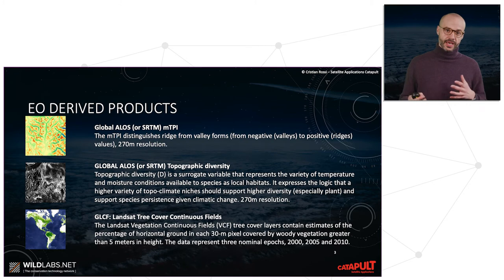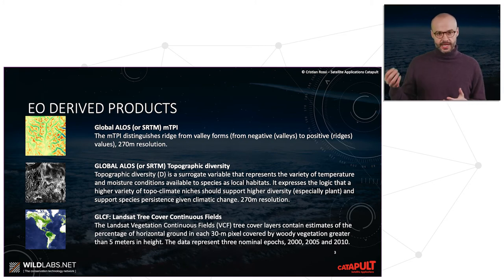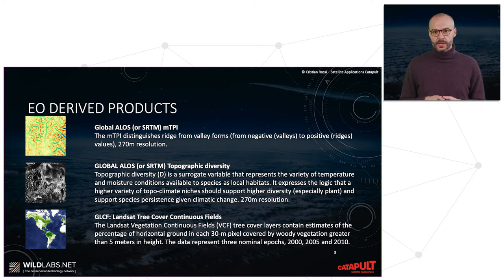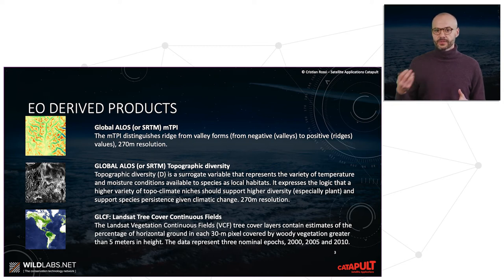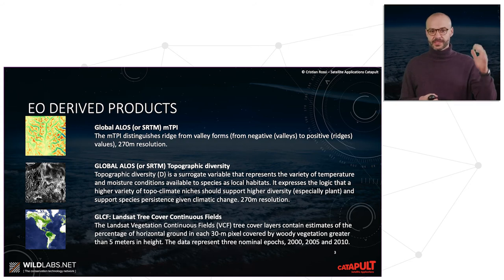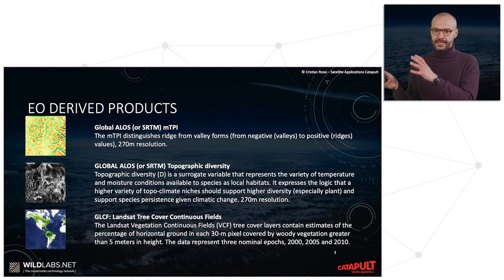For vegetation and forests, GLCF is the Landsat Tree Cover Continuous Fields product, which contains estimates of the percentage of horizontal ground in each 30-meter pixel covered by woody vegetation greater than 5 meters in height, at three different time periods.